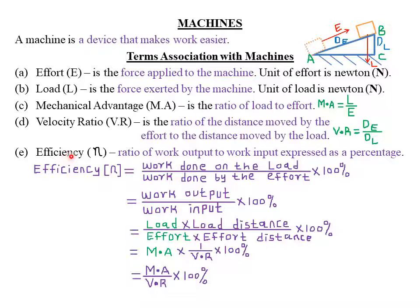The fifth term is what we call efficiency, denoted by the Greek letter eta (η). Efficiency is defined as the ratio of the work output to the work input, expressed as a percentage. You can also define it as the ratio of the work done on the load to the work done by the effort, expressed as a percentage. Expressing as a percentage means multiplying by 100%.